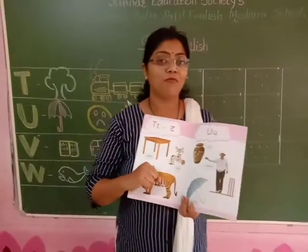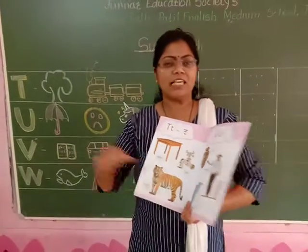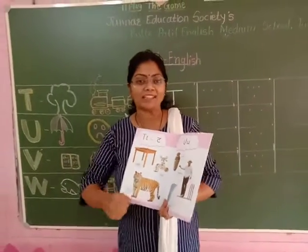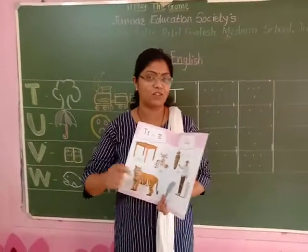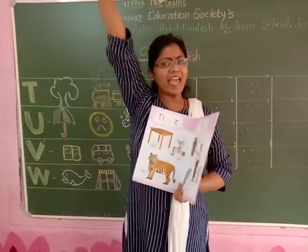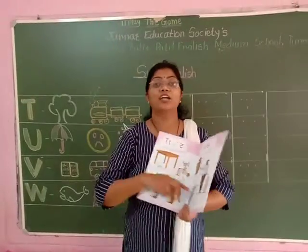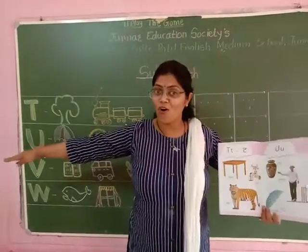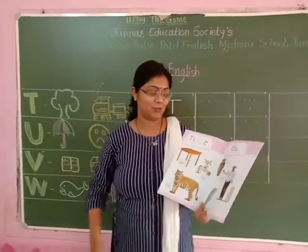The umpire tells about all the rules and observes the match. When someone hits a six, the umpire will signal like this — six! Then four, like this, okay?